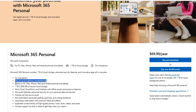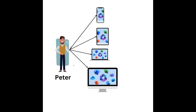You can install this on your mobile phone, your laptop, your desktop, and your tablet. For example, Peter Parker can install his Microsoft 365 Personal plan on his laptop, desktop, mobile phone, and tablet, and all his data synchronizes across all these devices seamlessly and very securely.